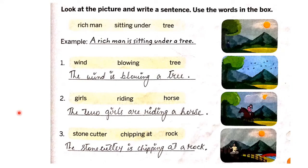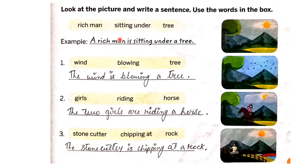First we will see story writing with pictures. Here you look at the picture and write a sentence, using the words in the book. Pictures and words are both given. For example, the first one shows a rich man sitting under a tree. So the sentence will be: A rich man is sitting under a tree.